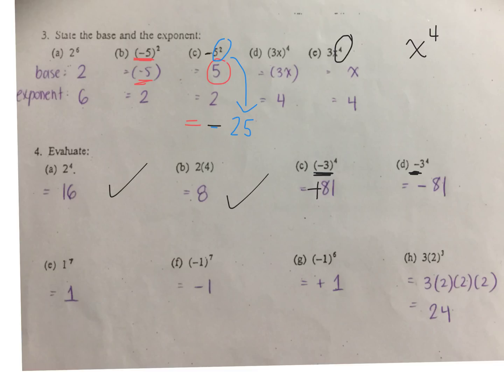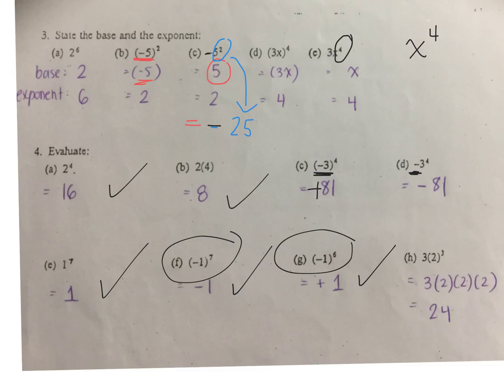Check e. Positive 1. Negative 1. Positive 1. Both of these are in brackets, so the negative is being multiplied by itself.